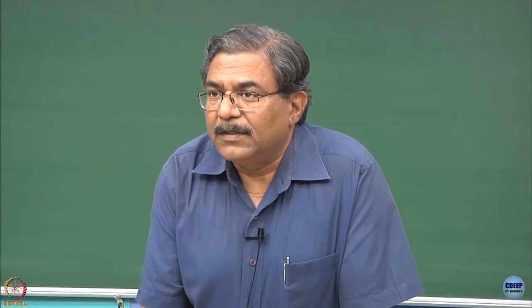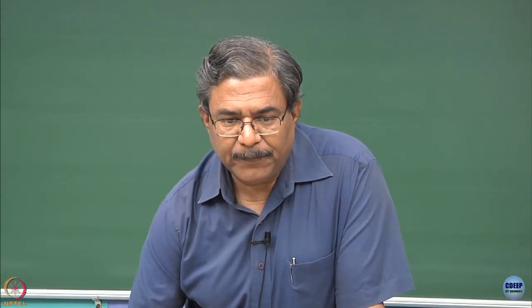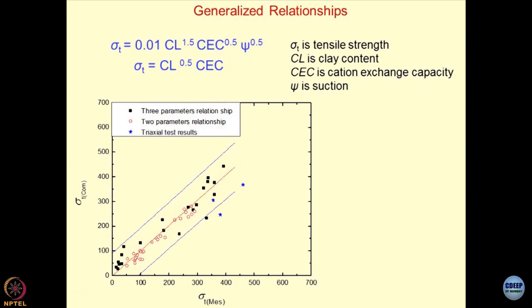Instructor: No, no, no. See, three parameter and two parameters are the equations. So what you get is sigma t computed. Sigma t computed you get from these two equations, and sigma t is the tensile strength test which you get from triaxial testing. If you match these two, then you realize that there is a significant match between the two. Student: So in the first case you are considering suction also, and in two parameters there is no suction values. So in case of that you will get something sigma t value something lower.